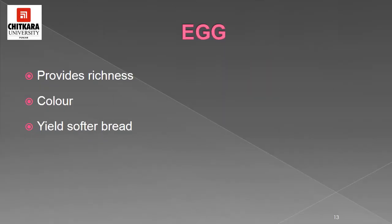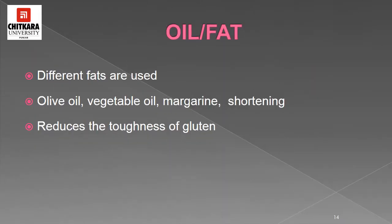Egg provides richness to the dough. It helps in providing a good color to the crust after baking and yields a softer bread compared to bread made with water. Fat incorporated in the flour mixture physically interferes with the development of gluten, creating a more tender crumb. The fats most commonly used in baking are shortening, unsalted butter, and margarine. Oil and lard are sometimes used.